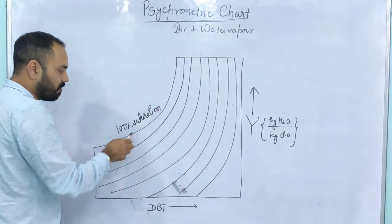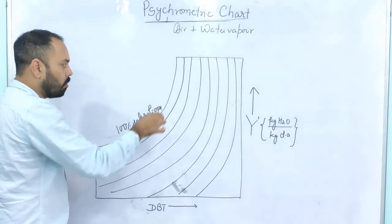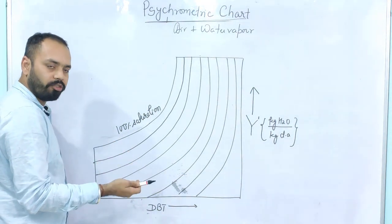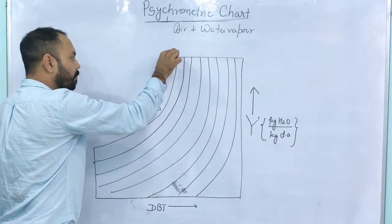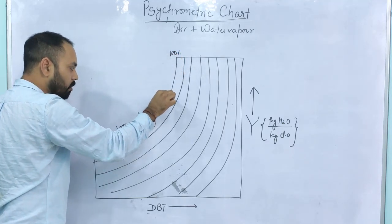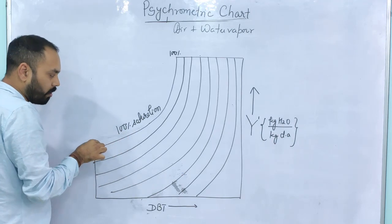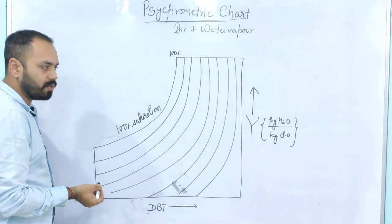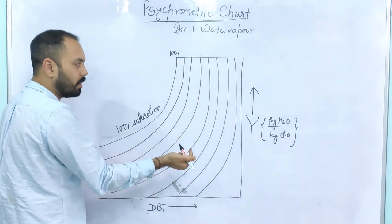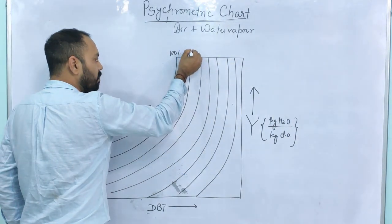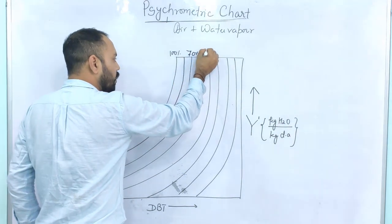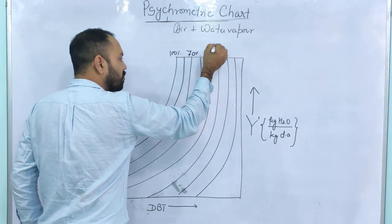The curves represent percent saturation. This curve shows 100% saturation, also called 100% relative humidity. Along this curve, the percent saturation of the air vapor mixture is always 100%. As you go from left to right, the percent saturation decreases — so a line may be 70% saturation, 50% saturation, 30% saturation. This graph is not to scale, so I am writing random values.